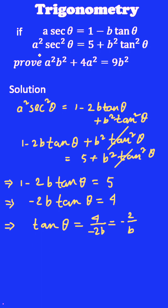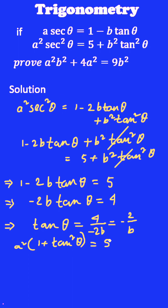Now, from the second equation, you can write s² into (1 + tan²θ). As we know that 1 + tan²θ is equal to sec²θ, so replace the value of sec²θ with 5 + b²·tan²θ.